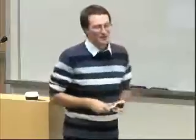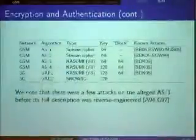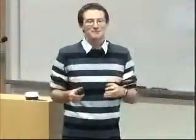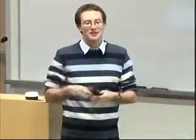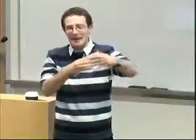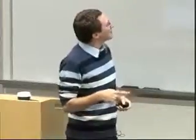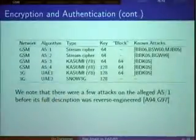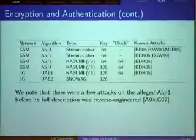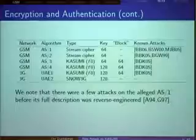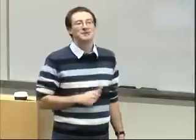A5/3 uses KASUMI. KASUMI accepts blocks of 64 bits and keys of 128 bits. There is only one problem: the standards say that at the end of A3 and A8, up to this generation, you get 64 bits of a key. But you need 128 bits, so you just copy the 64 bits, duplicate them, and voilà - a 128-bit key for free. There were some theoretical attacks on KASUMI, published at AsiaCrypt '05. At some point, A5/3 became A5/4, which is KASUMI in the same mode of operation but now supports 128-bit keys.